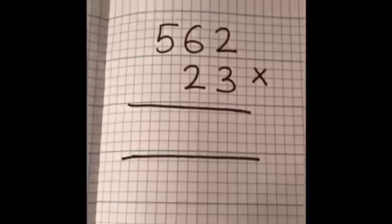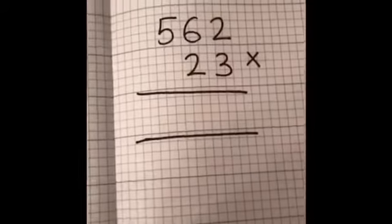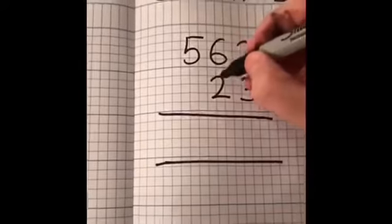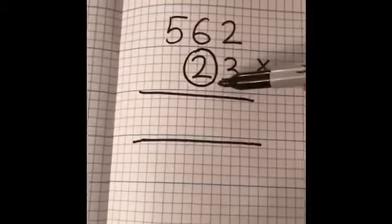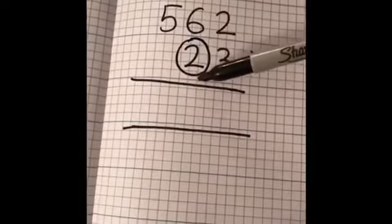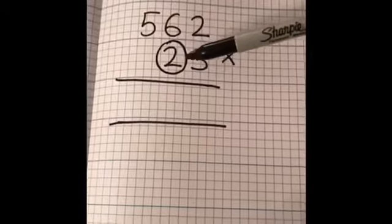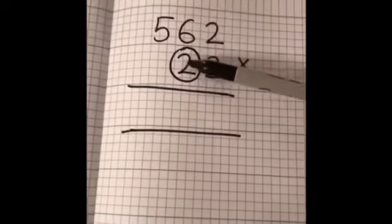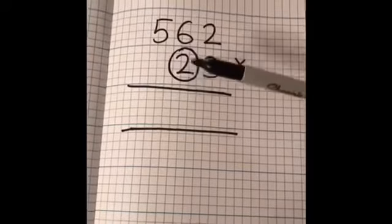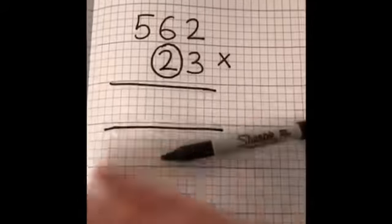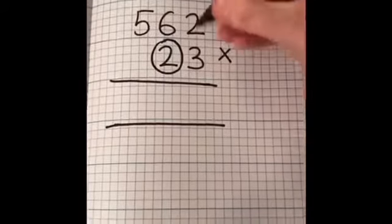Now, before we do any working out or try to figure this out, what I like to do is put a circle around the tens column. There's a reason why I do that – it's to remind me that I don't need to worry about that just yet. At the moment, I'm not going to be multiplying this 2, or 20, because the value of this number is 20. I'm only going to be worrying about this 3. So I just put a circle there to remind me: I'll come back to you later.